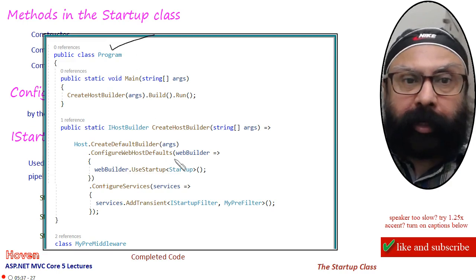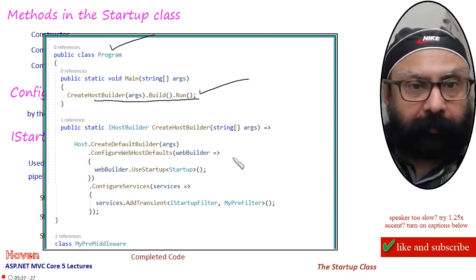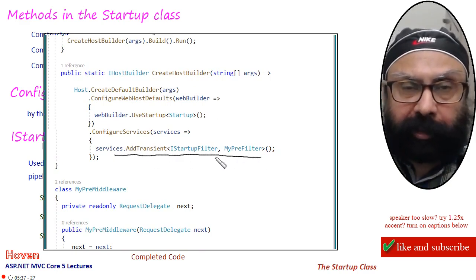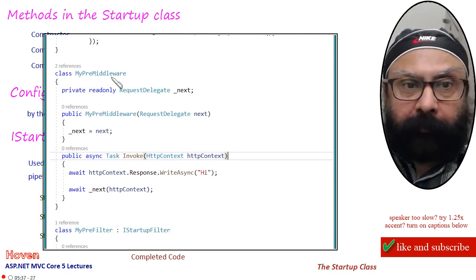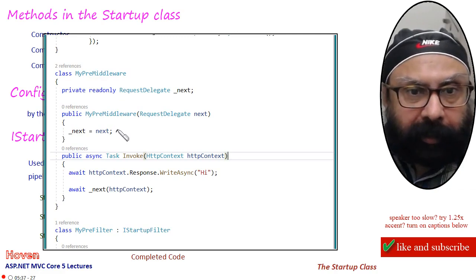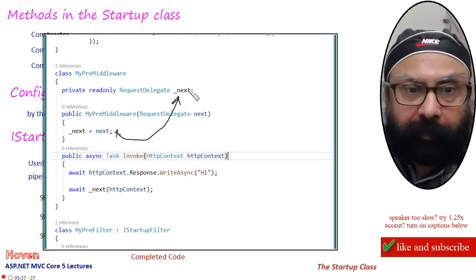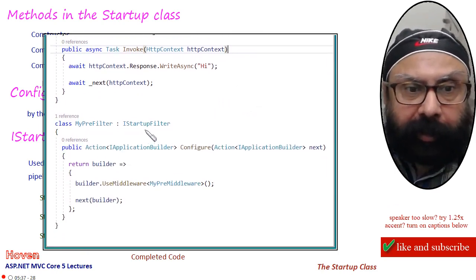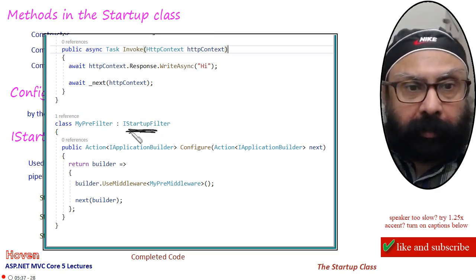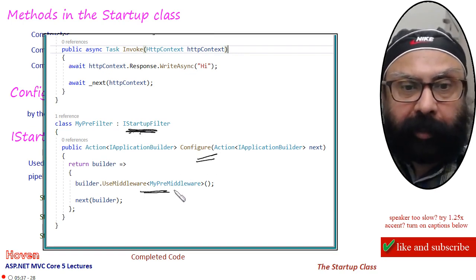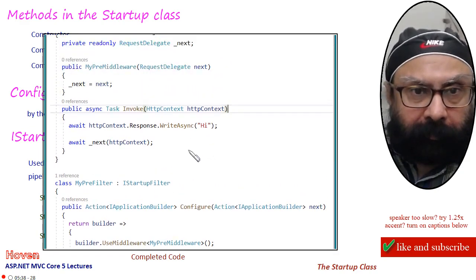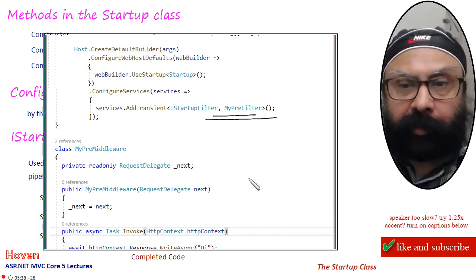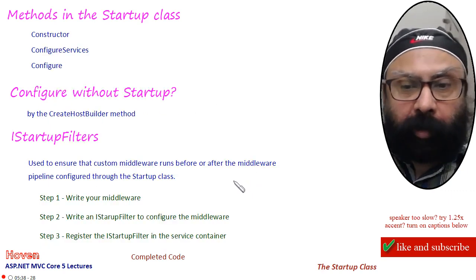We can see the complete code: the program class with CreateHostBuilder, build, and run. Inside CreateHostBuilder we register our filter. The middleware class gets the RequestDelegate, caches it as a read-only, and the Invoke method causes the custom code to run. The IStartupFilter configures and tells that MyPreMiddleware is to be used, and this filter is registered in the host builder. With this we can close this lecture. Thank you.